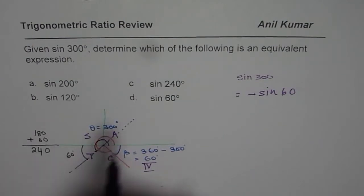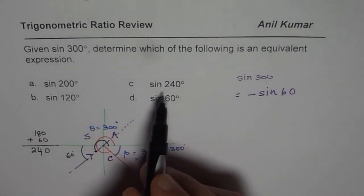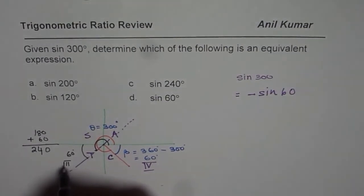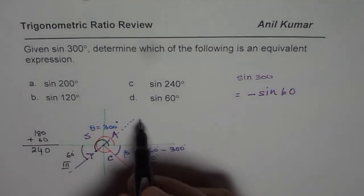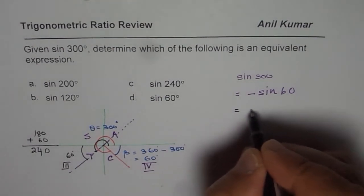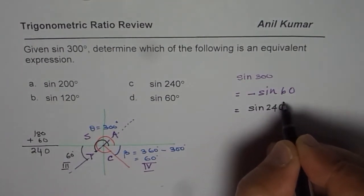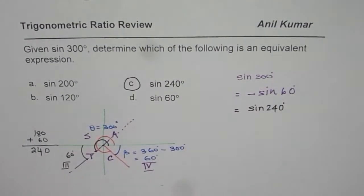So do we have that option? Yes, we do. So that works, because sine of 240 will be in quadrant 3, and in quadrant 3 also, sine is negative. So it is also equals to sine of 240 degrees. Do you understand? So that is indeed the correct option.